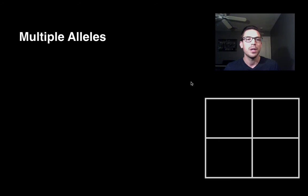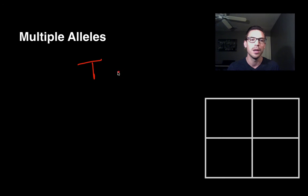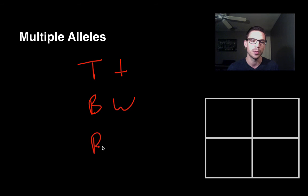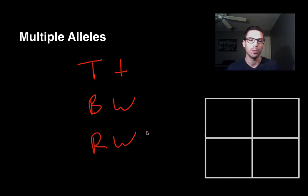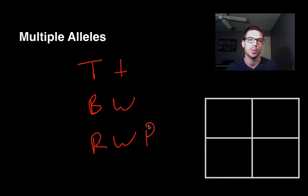The third pattern is multiple alleles. Up until now we've been talking about just two options — a tall allele and a short allele, or black and white, or red and white. But in many cases there are more than two alleles for one trait. What if there was a third option, like a purple allele? In some cases we can have three, four, five, or even more alleles for one particular trait, and if this happens, we say there are multiple alleles for that trait.